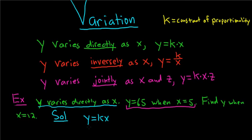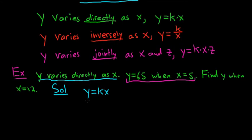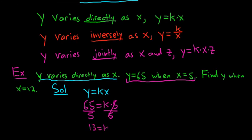Plug in 65 for Y: 65 equals K times 5. To solve for K, divide both sides by 5. 65 divided by 5 equals 13, so K equals 13. Now that we've found K, plug it back into the equation: Y equals 13X.